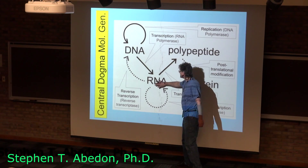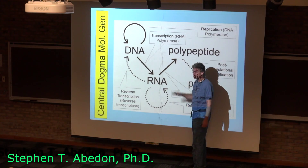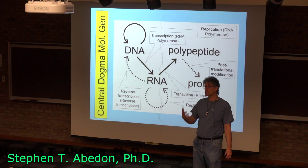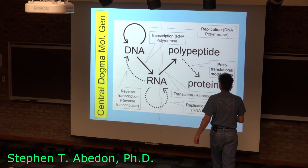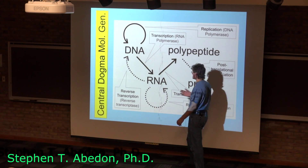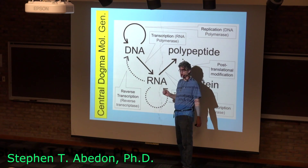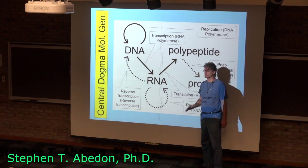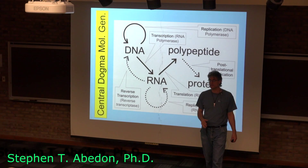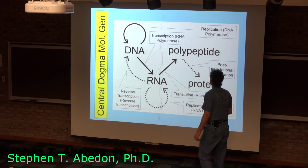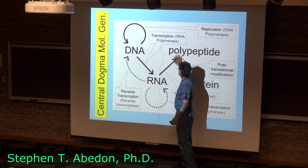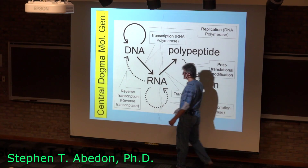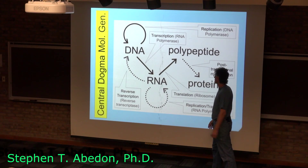Going from RNA to polypeptide is translation — this is actually reading a code found in the RNA. It turns out to be a three-nucleotide code for every amino acid, converting that information into a sequence of amino acids in polypeptides. This is a much more complicated step and not that similar to replication or transcription.